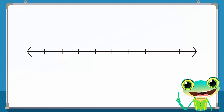Unlike the corridor, however, we can also display negative numbers on a number line. Numbers to the left of 0 are negative numbers and numbers to the right of 0 are positive numbers. We know that an integer such as minus 2 can be represented on a number line like this.